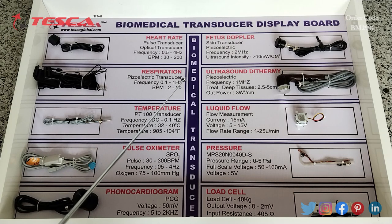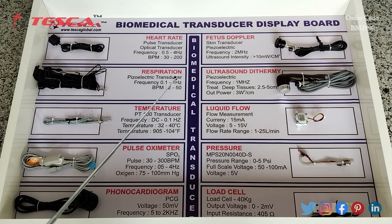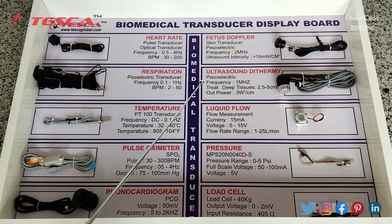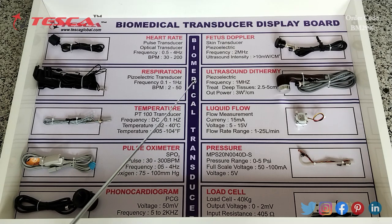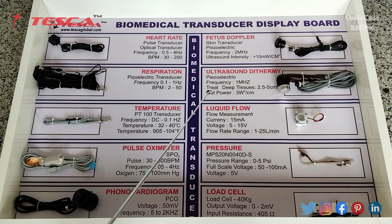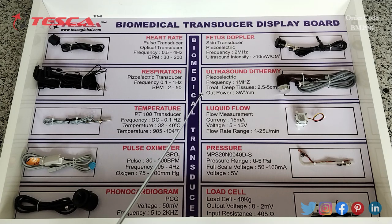Then this is ultrasound diathermy. It is a type of piezoelectric transducer. Its frequency range is 1 megahertz and it is used to treat deep tissues of 2.5 to 5 centimeters. Its output power is 3 W per centimeter square.